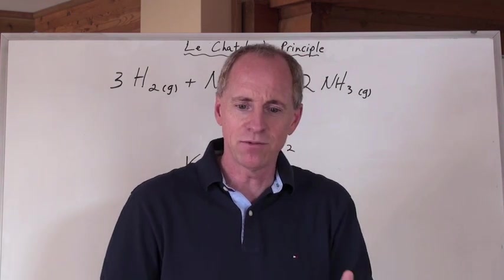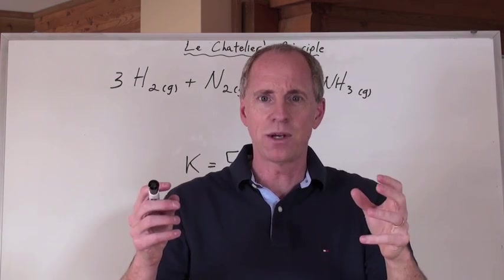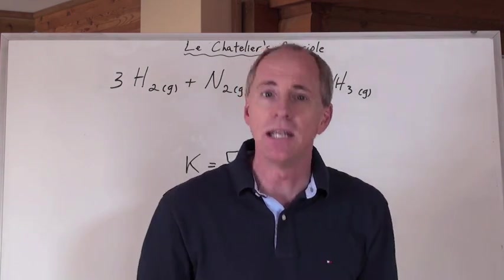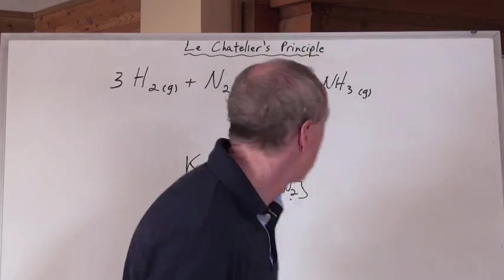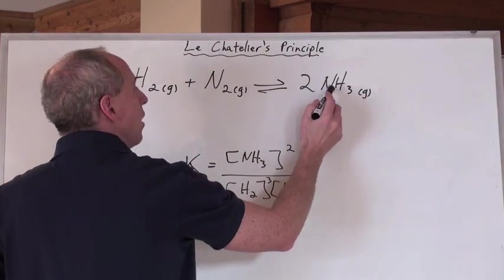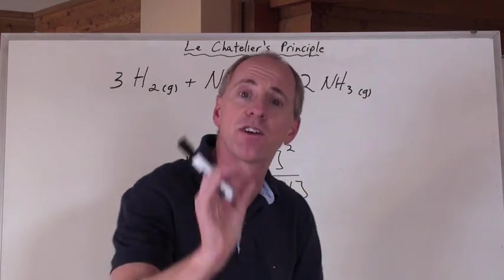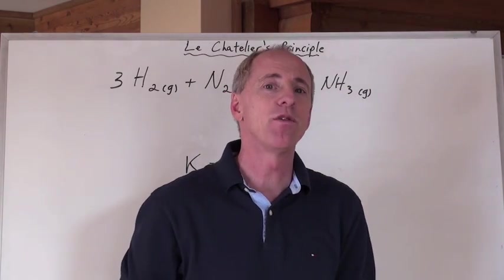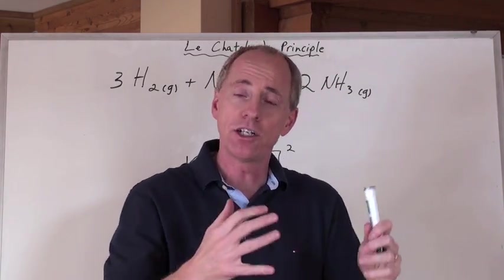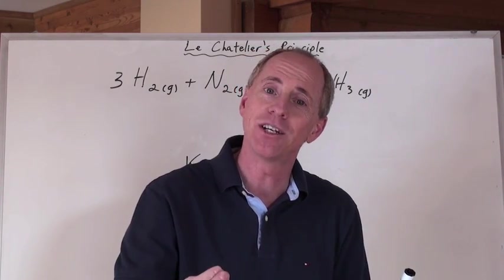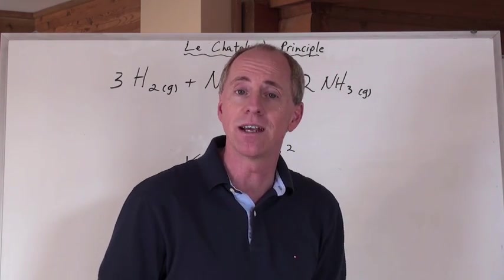And you're going to say, well, chem guy, doesn't that involve doing that products minus reactants thing to calculate delta H? Yup, except for one thing. This is the heat, well, this is a reaction of the formation of NH3 from its elements. And when it forms from its elements, you just look up on a chart for the molar heat of formation of that chemical. By the way, it's about negative 46.